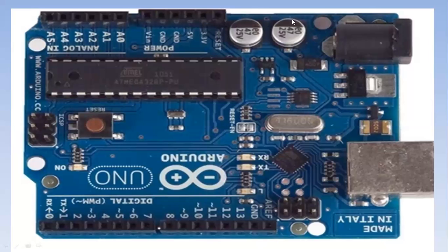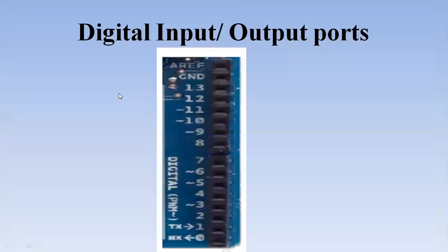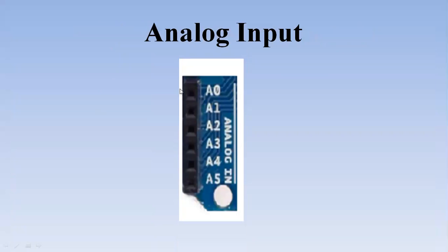Now I want to show you the digital input and output ports. From port number 0 to port number 13, we can use these ports as digital input and digital output ports. This picture is taken from the Arduino board. The pins from A0 to A5 can be used as analog inputs.